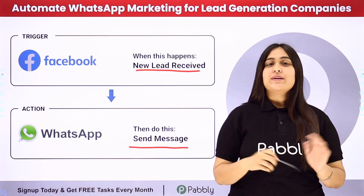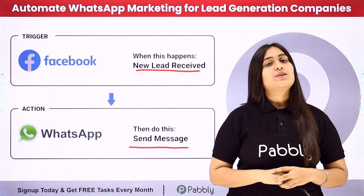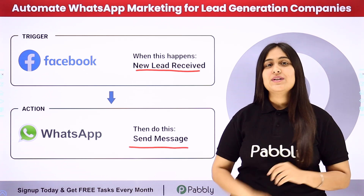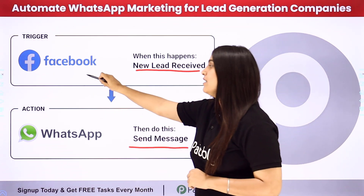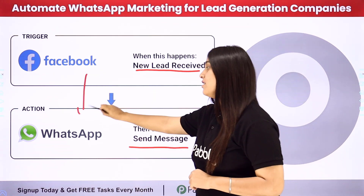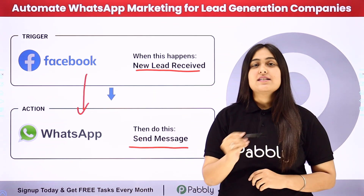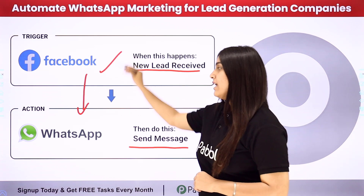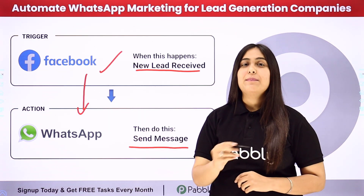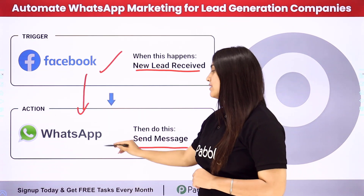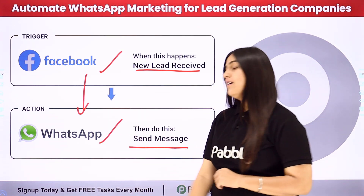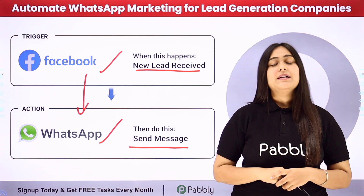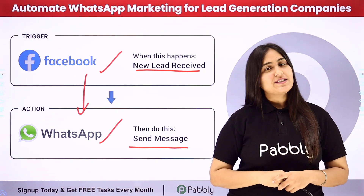To automate this process we will use an automation software named Pably Connect, in which we need to connect our trigger and our action. Our trigger application will be Facebook Lead Ads and our action application will be WhatsApp Cloud API. Let me take you to my screen to learn this process step by step.